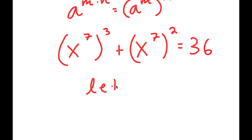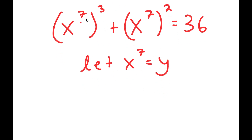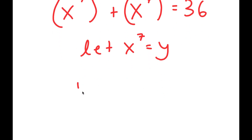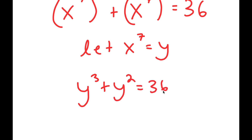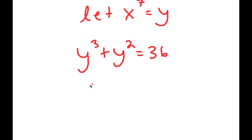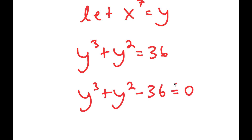From here, I can let x to the power of 7 equal to the variable y. So now if I substitute in y for x to the power of 7, I get y to the power of 3 plus y squared is equal to 36. And if I subtract 36 on both sides, I get y to the power of 3 plus y squared minus 36 is equal to 0.